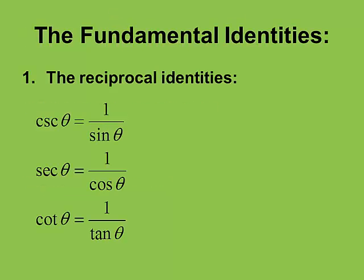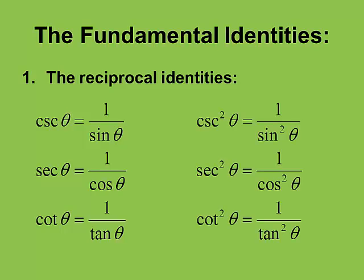This should come as no surprise. Cosecant is the reciprocal of sine, secant is the reciprocal of cosine, and cotangent is the reciprocal of tangent. Those are the reciprocal identities. And that also leads into the squared versions: cosecant squared equals 1 over sine squared, secant squared equals 1 over cosine squared, and cotangent squared equals 1 over tangent squared. All I did was square both sides — not earth-shattering.